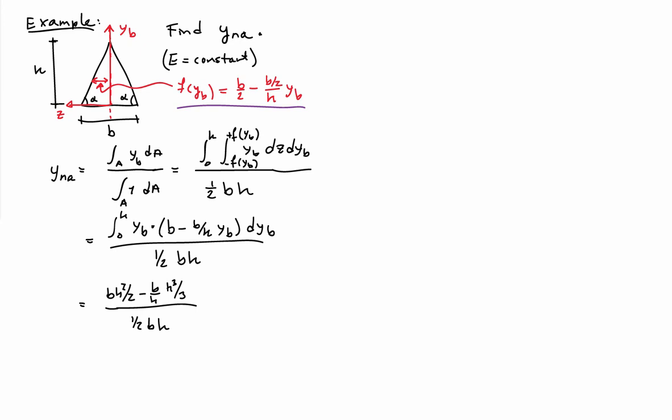So computing the integral with respect to y_b, out of the first term we'll get a y_b squared over 2, and out of the second term we'll get a y_b cubed over 3. We can plug in the limits 0 and h.